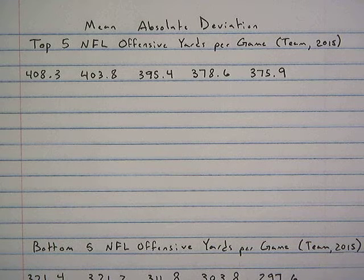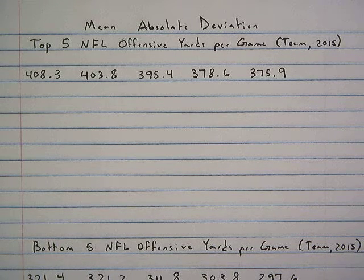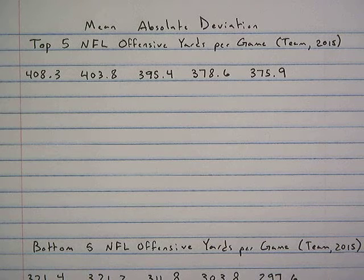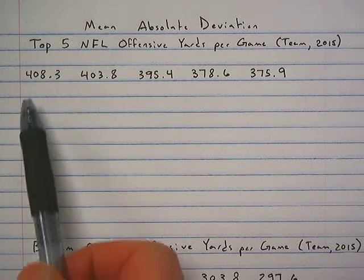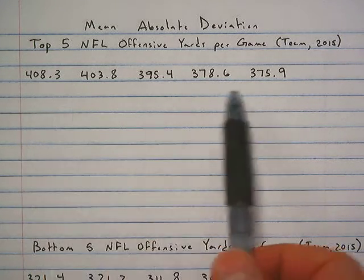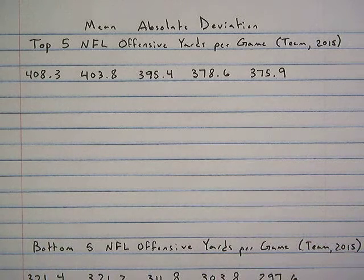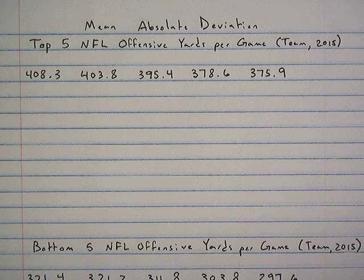The first set that we're going to look at is the top five NFL offensive yards per game for the 2015 season. These are by team, so you can see I have numbers from 408.3 to 375.9, and we want to get a glimpse into how spread out this data is.